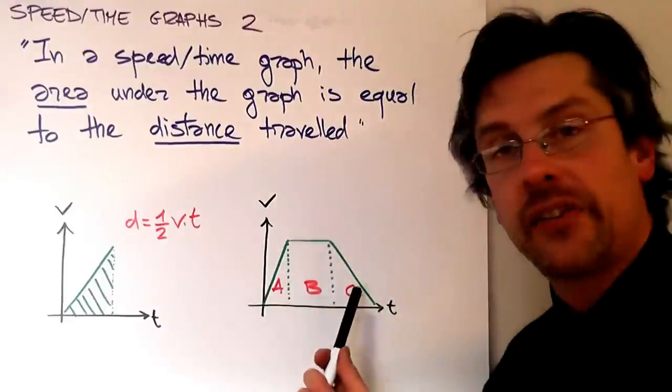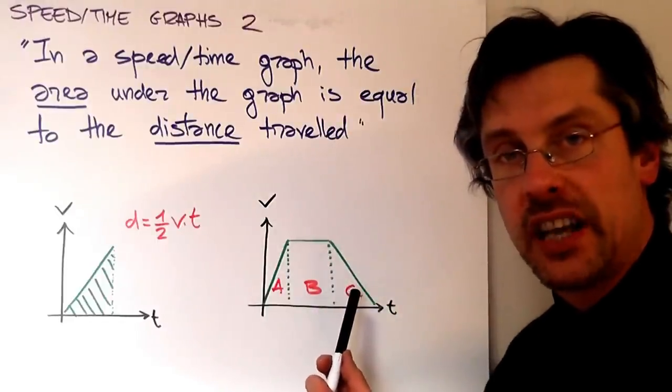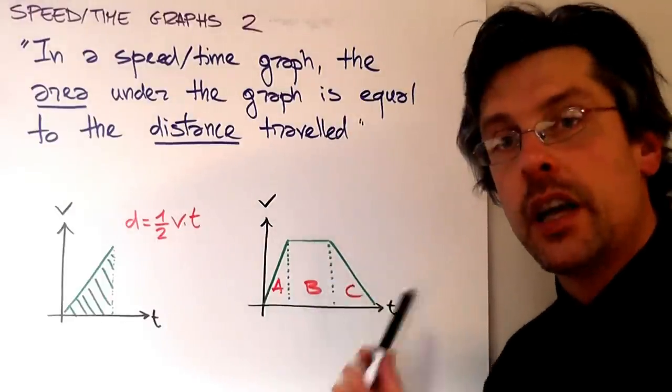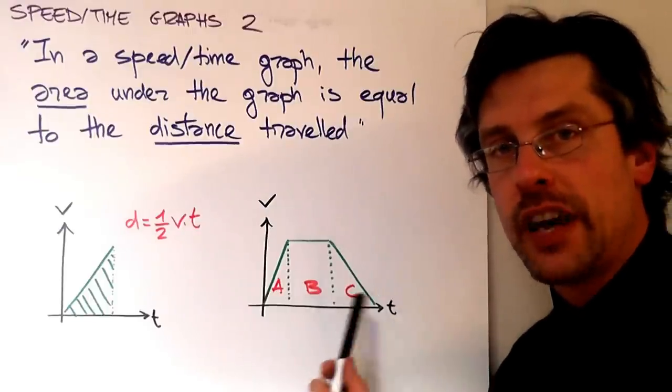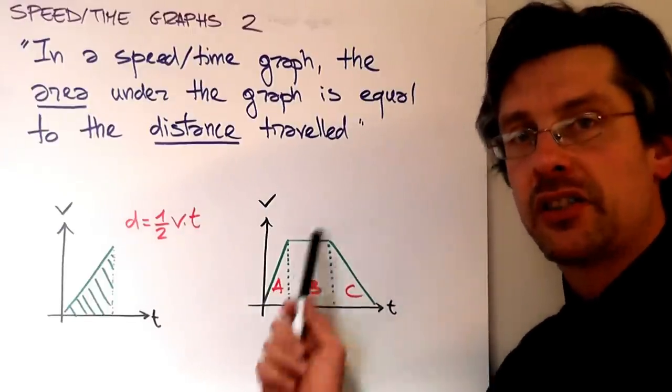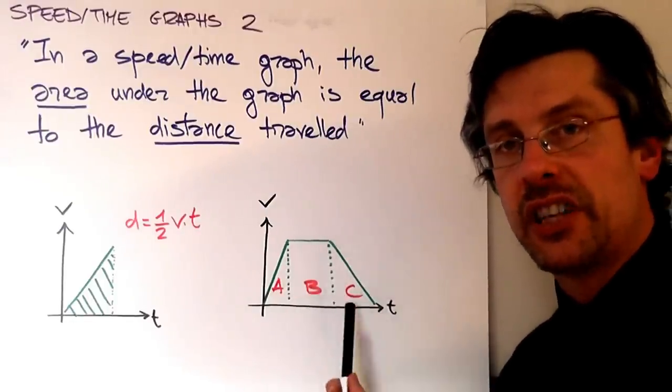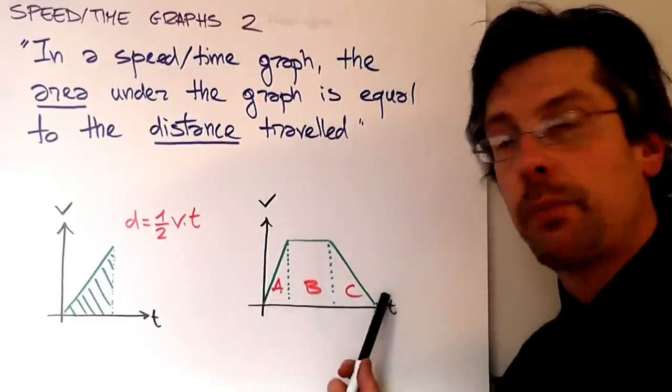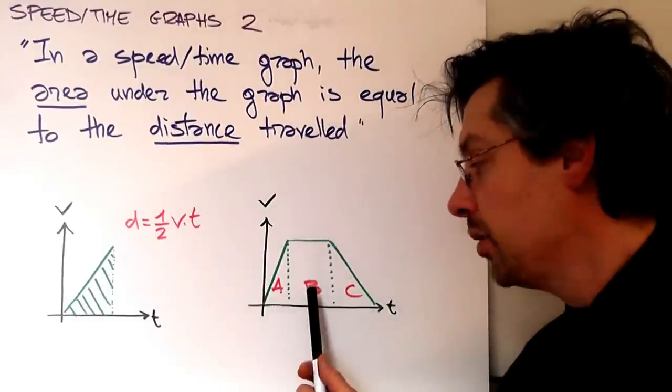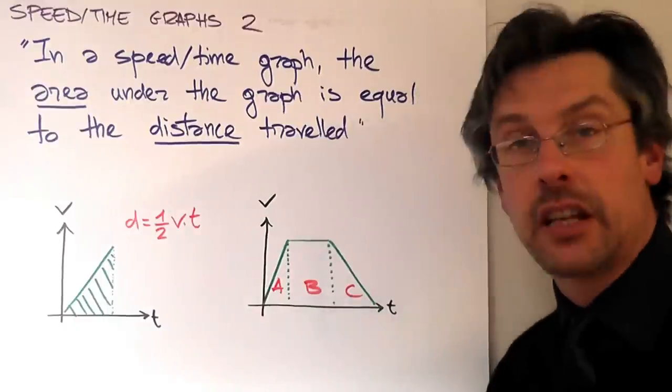How about a shape like the one we had at the beginning of this lesson, a trapezoid? Even if you don't remember the formula for the area of a trapezoid, you can still work out this distance by breaking up the trapezoid in three parts. And this is a triangle, this is a rectangle, and this is another triangle.